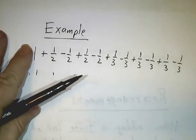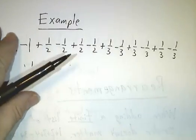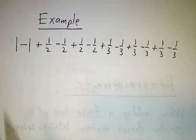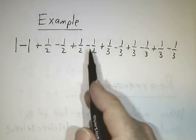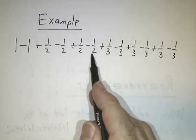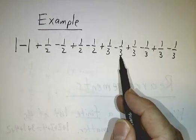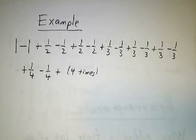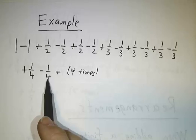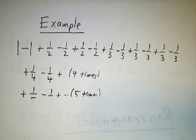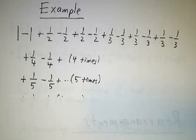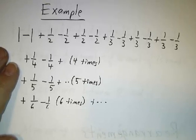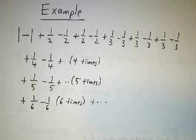Let's start with the series. You take 1 and subtract 1, then add a half and subtract a half, then add a half again and subtract a half, then add a third and subtract a third — do that three times; add a fourth and subtract a fourth — do that four times; add a fifth and subtract a fifth — five times; add a sixth and subtract a sixth — six times. You get the idea.